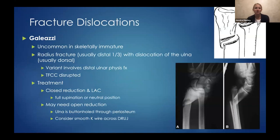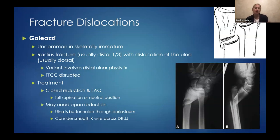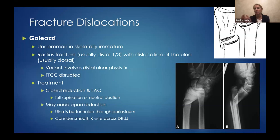The opposite end of this spectrum is Galeazzi fractures — less common in skeletally immature patients, usually a distal third radius fracture with dislocation of the ulna. There are variants in children where there is a physeal fracture through the distal ulnar physis, and the TFCC is disrupted. These can often be treated with closed reduction and long-arm casting to prevent pronosupination, usually positioning in full supination or neutral to help stabilize the TFCC. If you're not getting the reduction, you may need to open, as the ulna may buttonhole through the periosteum, and consider K-wiring across the DRUJ temporarily.